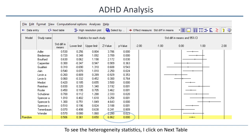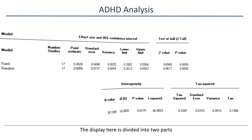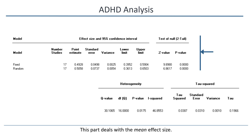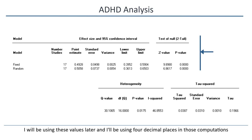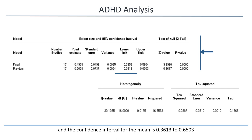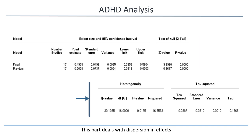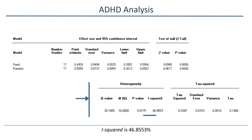To see the heterogeneity statistics, I click on Next Table. The display here is divided into two parts. This part deals with the mean effect size, and the statistics here are the same as the ones we saw on the prior screen. I'll click Format, Increase Decimals. The mean effect size is 0.5058, and the confidence interval for the mean is 0.3613 to 0.6503. This part deals with dispersion in effects, and here I can pick up the values for heterogeneity. The Q value is 30.1065. Degrees of freedom is 16. The P value is 0.0175. I-squared is 46.8553%. Tau squared is 0.0387, and Tau is 0.1966.